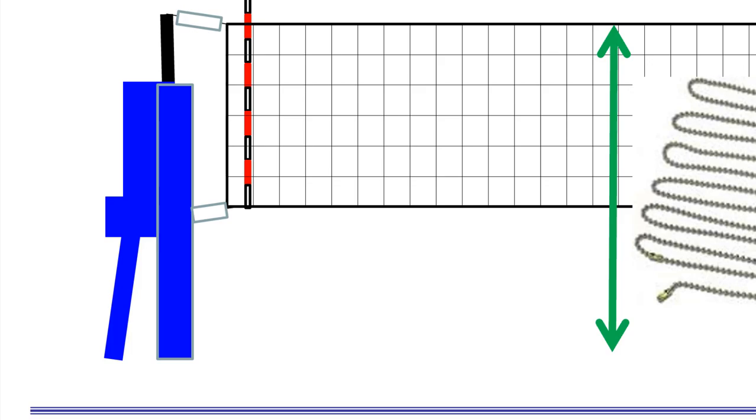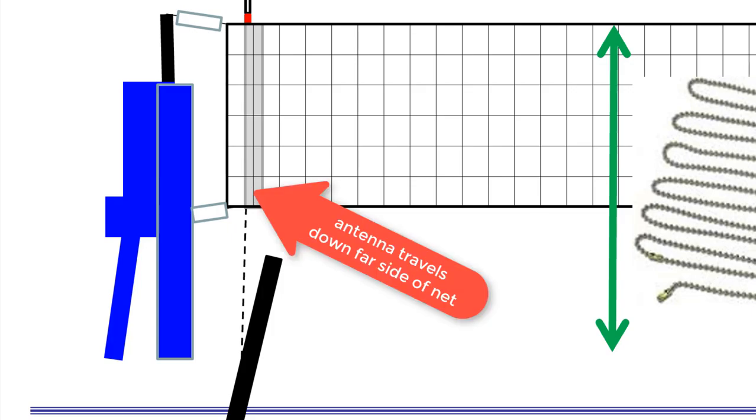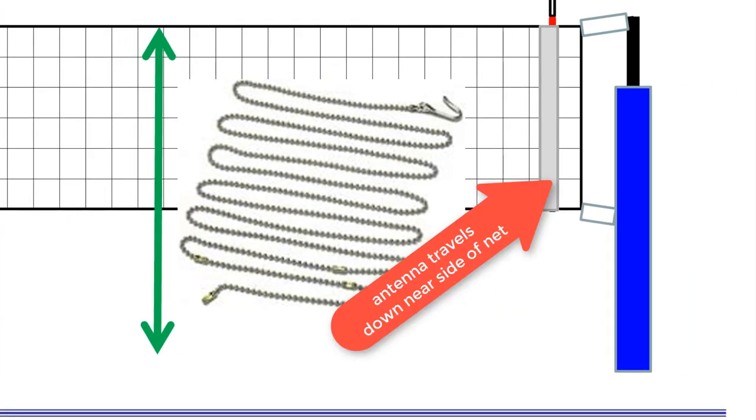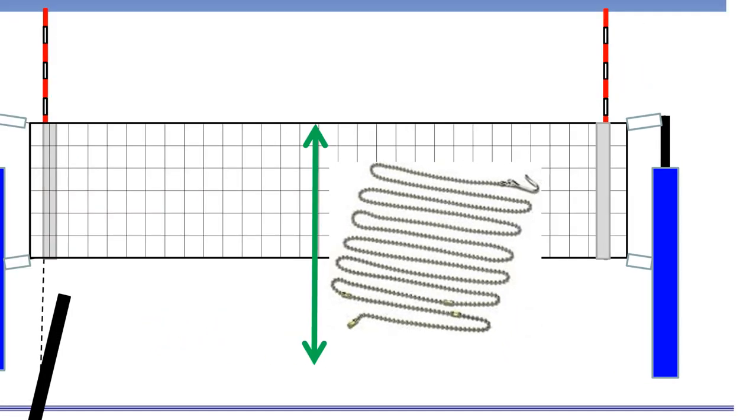And that the antenna is in alignment with the outside edge of the sideline. If you're using an antenna that's in a sleeve, and that sleeve is the same width as the sideline, that sleeve needs to be in alignment with the sideline and the antenna on the outside edge. There is an unwritten rule regarding the antennas about placement. The antenna closest to the R1 should be to the left of the R1, and the antenna closest to the R2 should be to the R2's left. This places the antennas on opposite sides of the net.